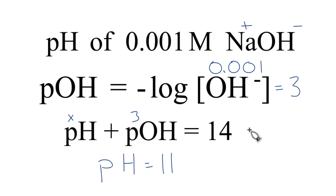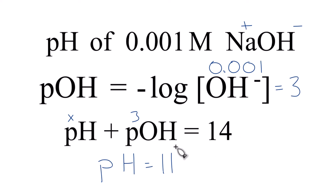So that's pH and pOH, and that's how you find the pH of a 0.001 molar solution of sodium hydroxide. The answer is 11.